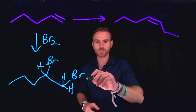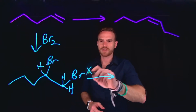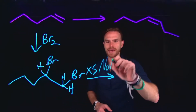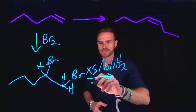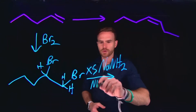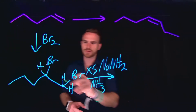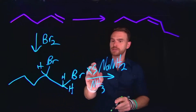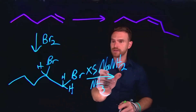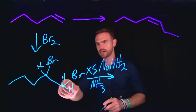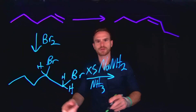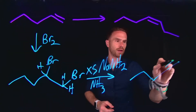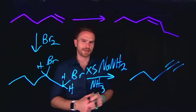In order to do this, we need to use a really strong base — for example, an excess amount of NaNH2 in the presence of ammonia (NH3) — and that will allow us to form an alkyne by doing a double elimination. I specified excess amount of this base, which will deprotonate and form the alkene and then subsequently the alkyne. So my new alkyne is going to look like this.